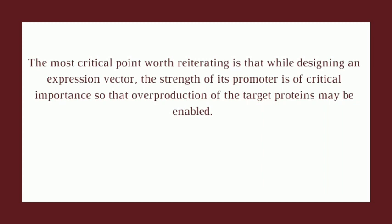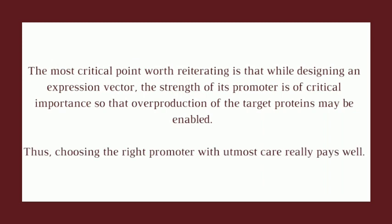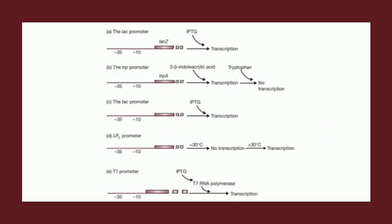The most critical point worth reiterating is that while designing an expression vector, the strength of its promoter is of critical importance so that overproduction of the target proteins may be enabled. Some prokaryotic strong promoters include lac, trp, tac, lambda pL, and T7 promoters, which work fantastically for tremendous production of target products. The gratuitous inducer IPTG works as an efficient inducer for lac, tac, and T7 promoters, whereas indole acrylic acid and temperatures below 30°C work for trp and lambda pL respectively, as shown in a conceptual figure.